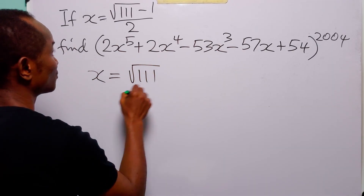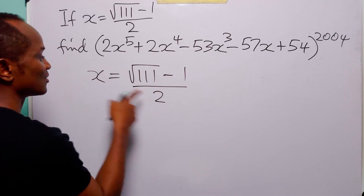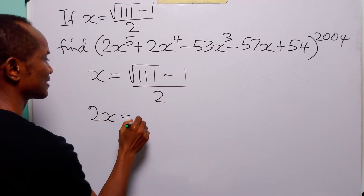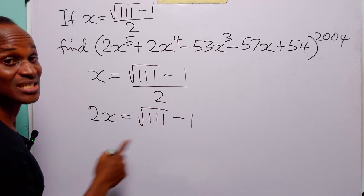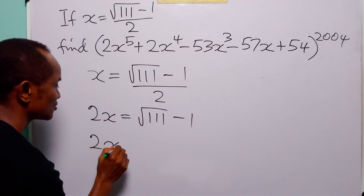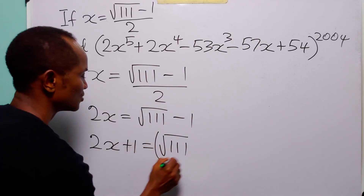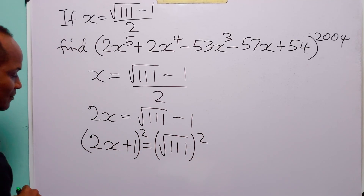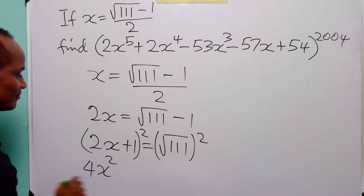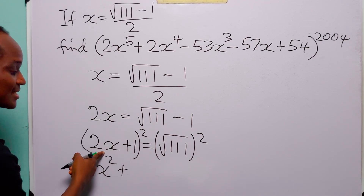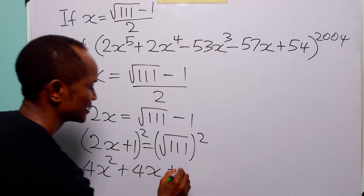We start with x = (√111 − 1) / 2. We multiply both sides by 2: 2x = √111 − 1. So 2x + 1 = √111. The next thing we do is square both sides of this equation: (2x + 1)² = 111. Expanding: 4x² + 4x + 1 = 111.